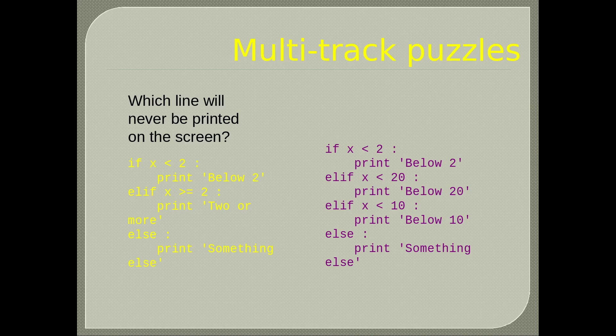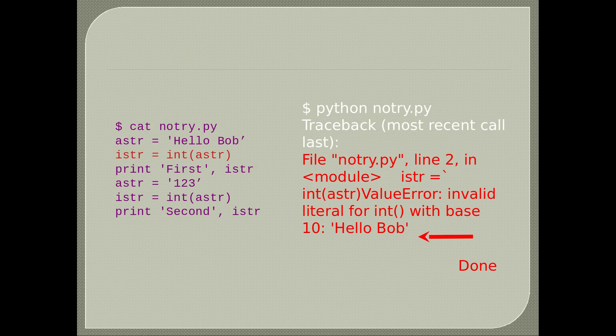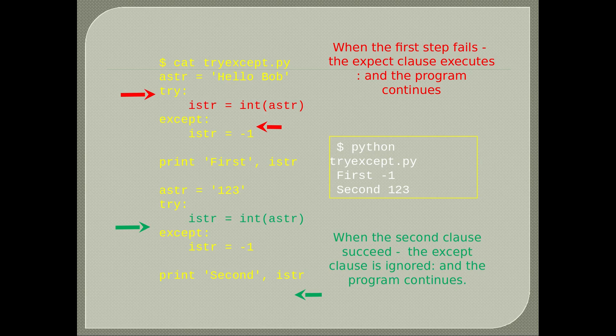Try/except structure: delimiting a section of code with try and except is used when we want to test an option or where the code can cause a program failure — called dangerous code. If the code in the try section works, except is ignored. If the code in try fails, the code in except is executed. In the second example with the try/except structure, when the first step fails the except clause executes and the program continues. When the second clause succeeds, the except clause is ignored.